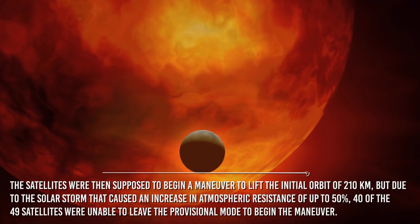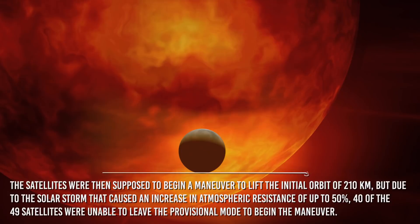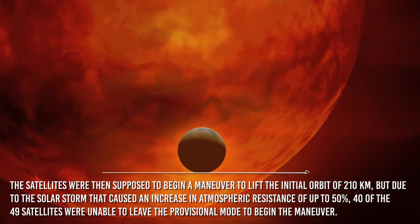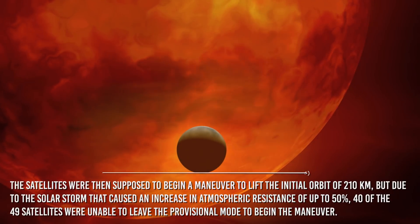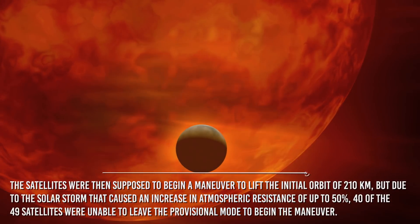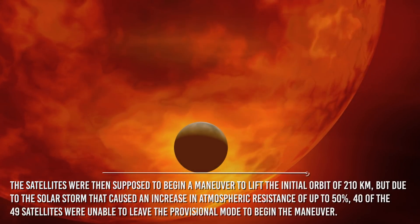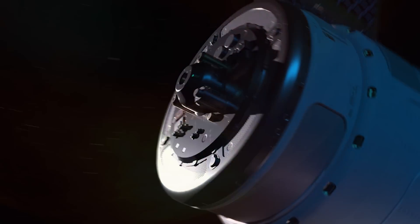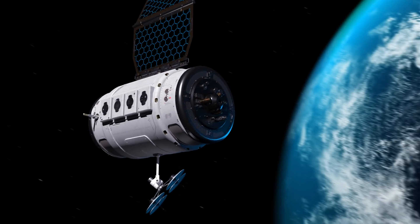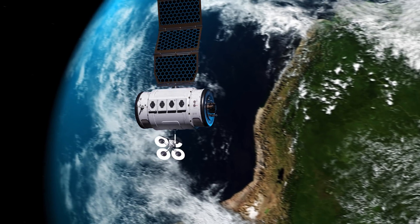According to the press release, the satellites were then supposed to bring a maneuver to lift the initial orbit of 210 kilometers. But due to the solar storm that caused an increase in atmospheric resistance of up to 50%, 40 of the 49 satellites were unable to leave the provisional mode to begin the maneuver. The satellites were therefore taken into deorbit and many of them have already re-entered the atmosphere.